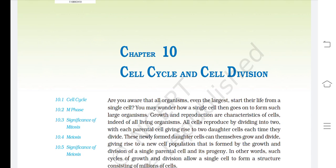Chapter 10: Cell Cycle and Cell Division. Are you aware that all organisms, even the largest, start their life from a single cell? You may wonder how a single cell then goes on to form such large organisms. Growth and reproduction are characteristics of cells, indeed of all living organisms.